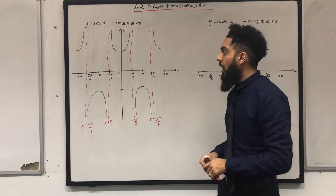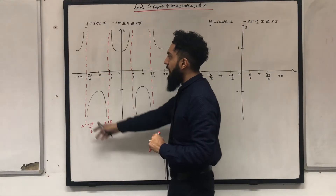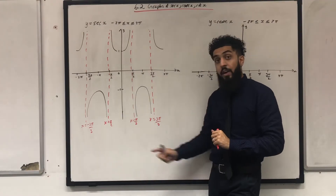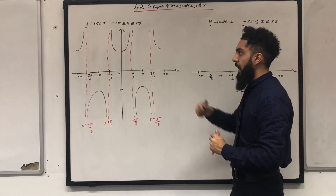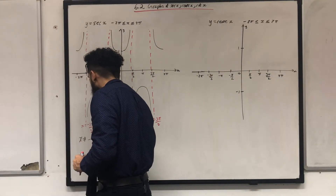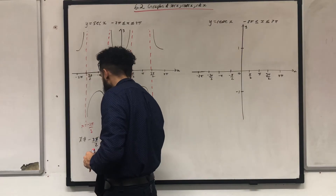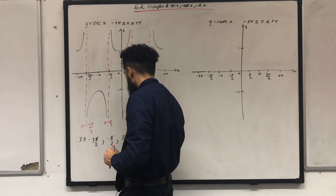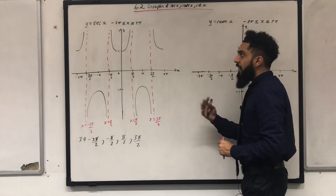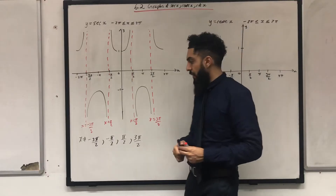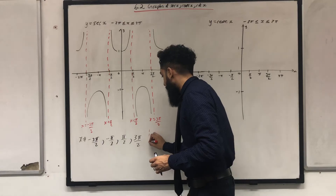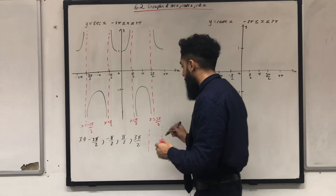Now, y = sec x is undefined at x = -3π/2, x = -π/2, x = π/2, and x = 3π/2. So x is not equal to those values. The other key observation is that the distance between any two asymptotes is π.